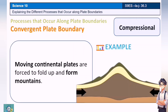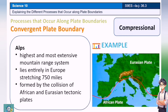Meanwhile, in Compressional Convergent Plate boundary, the moving continental plates are forced to fold up and form mountains. The Alps, the highest and most extensive mountain range system, is one example of mountains formed at a Compressional Convergent Plate boundary where the African and Eurasian plates collided. It lies entirely in Europe, stretching 750 miles.